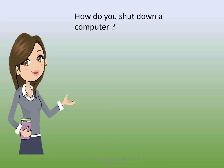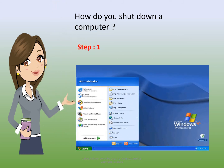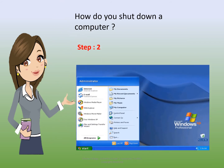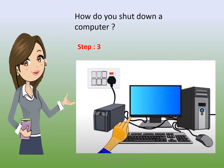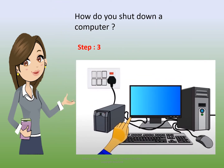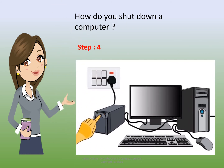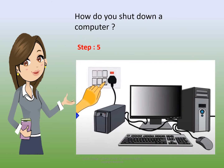How do you shut down a computer? There are a few steps to follow: Step 1 — click on the Start button; Step 2 — click on the Shutdown button; Step 3 — switch off the monitor; Step 4 — switch off the UPS; Step 5 — switch off the power supply.